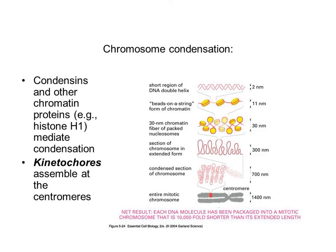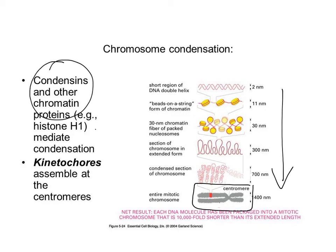In addition to formation of the mitotic spindle, we also have condensation of chromosomes. Chromosomes need to be packed into nice, dense, smaller structures so we can segregate them appropriately to two separate cells. Condensins and other types of proteins, such as histones, will ultimately help mediate the packing of a chromosome. To give you an idea of how packed that structure is — it's actually 10,000-fold shorter than its normal extended length.